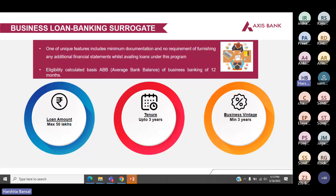Next program is banking surrogate. It requires very minimal documentation — we don't ask for any additional financial statements to avail the loan. The eligibility is calculated on the basis of the average bank balance of the borrower. The maximum loan amount offered here is 50 lakhs, tenure is up to three years, and business vintage is three years.